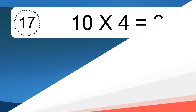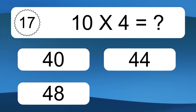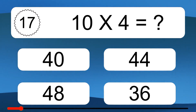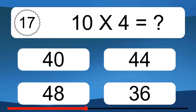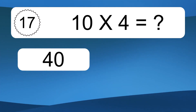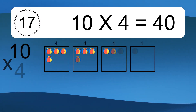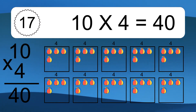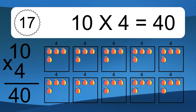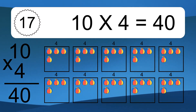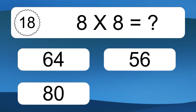10 times 4 equals what? 10 times 4 equals 40. We have 10 boxes, and each box has 4 colorful balls inside. If you count all the balls in all the boxes together, you will have 10 times 4 balls. This equals 40 balls.